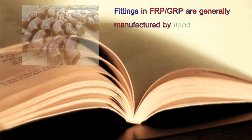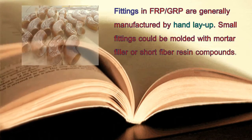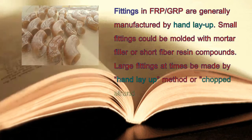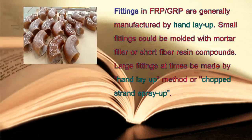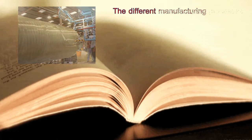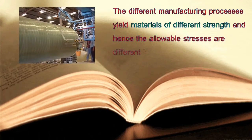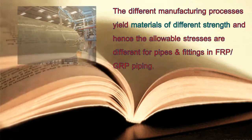Fittings in FRP or GRP are generally manufactured by hand layup. Small fittings could be molded with mortar filler or short fiber resin compounds. Large fittings can at times be made by hand layup method or chopped strands spray-up. The different manufacturing processes yield materials of different strength, and hence the allowable stresses are different for pipes and fittings.